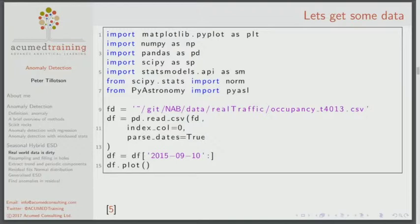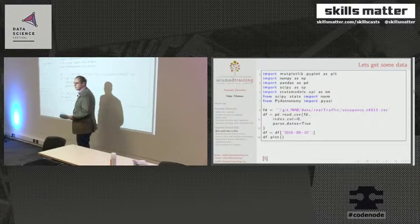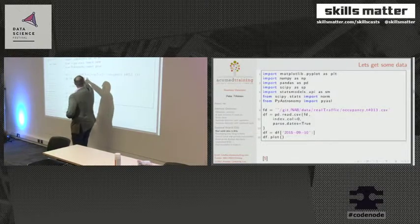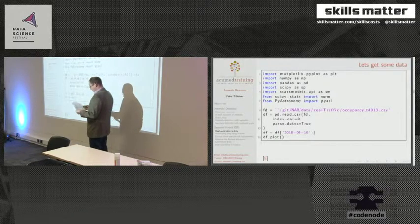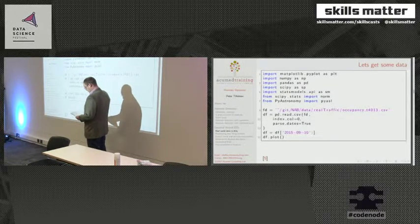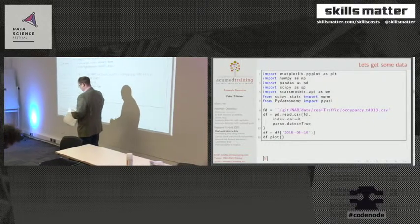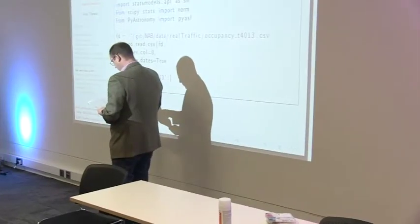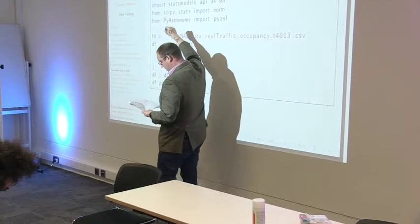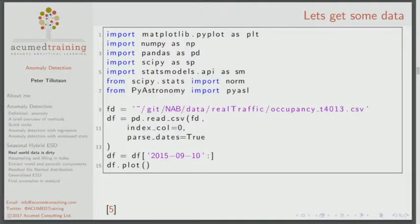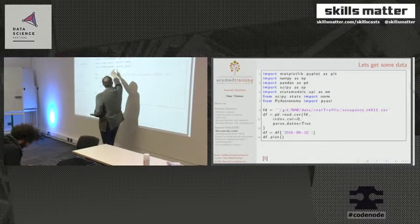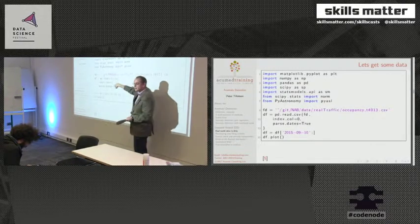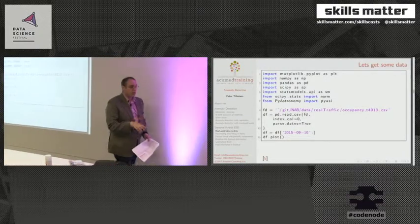I've put this code slide in more to show the packages being used. We're using NAB's data — Numenta has some benchmark anomaly detection data available. We read it in pandas, using tables. SciPy is only used to plot normal distributions. The statsmodels API gives us the time series decomposition, and PyAstronomy is where the generalised ESD algorithms come from. Basically the whole algorithm comes down to two lines of code in the next couple of slides.